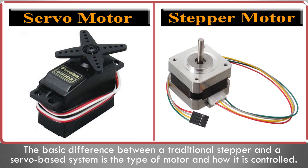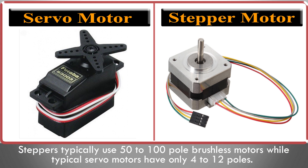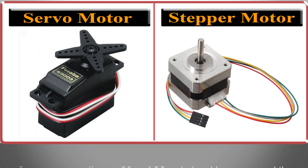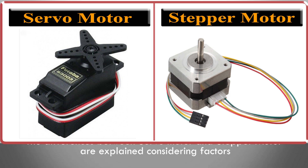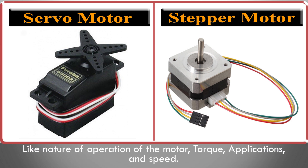The basic differences between a traditional stepper and a servo-based system is the type of motor and how it is controlled. Steppers typically use 50-100 pole brushless motors, while typical servo motors have only 4-12 poles. The differences between servo motor and stepper motor are explained considering factors like nature of operation of the motor, torque applications, and speed.